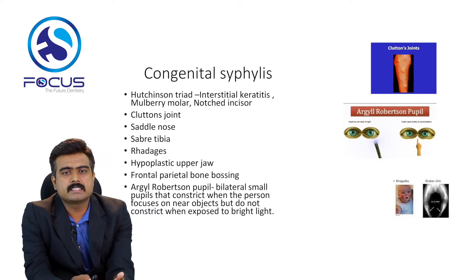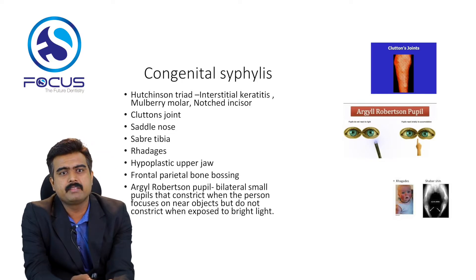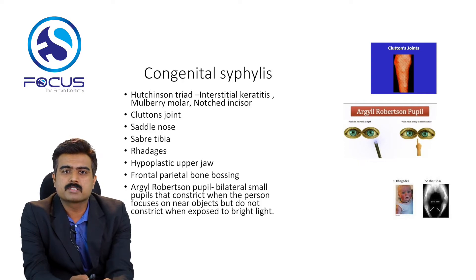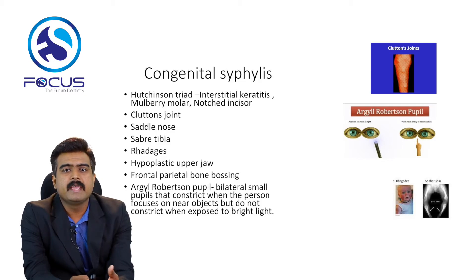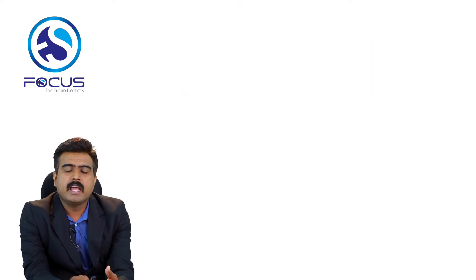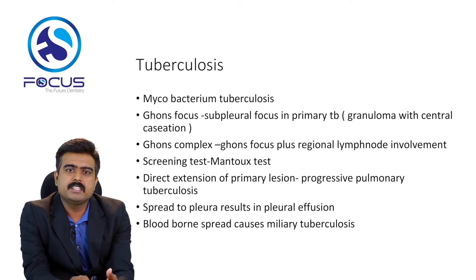In congenital syphilis you can see Hutchinson's triad — that is interstitial keratitis, mulberry molar, and notched incisor. You can see Clutton's joints. Radiographically there will be saddle nose, sabre tibia, Higouménakis sign, hyperplastic upper jaw, and frontal and parietal bossing. Another important finding is the Argyll Robertson pupil — a bilateral small pupil that constricts when a person focuses on near objects but does not constrict when exposed to bright light.